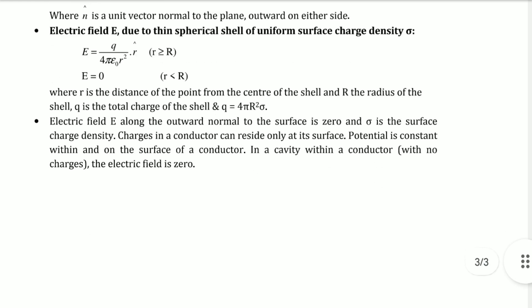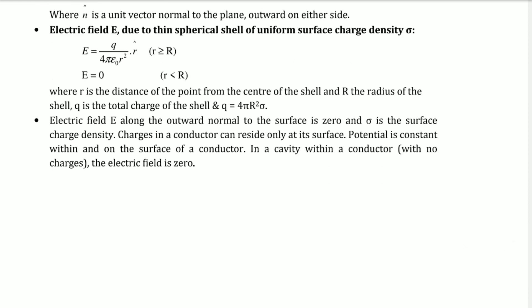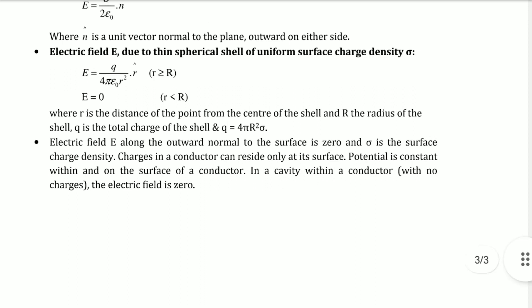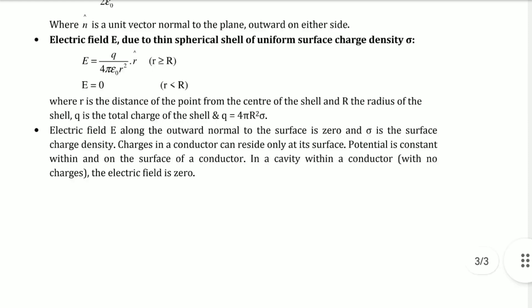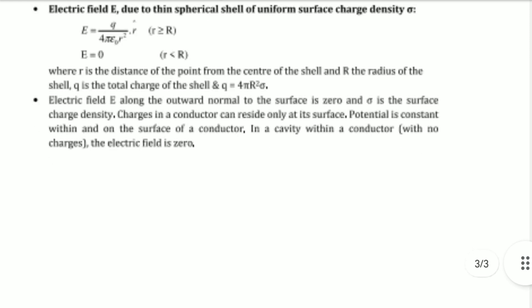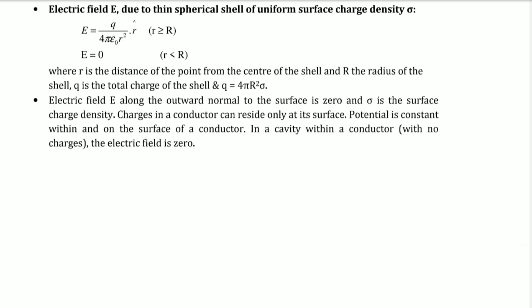Electric field due to thin spherical shell of uniform surface charge density σ: E = q/(4πε₀r²)·r̂ for r > R, and E = 0 for r < R (inside the shell). Here r is distance from center, R is radius of shell, and q is total charge: q = 4πR²σ.